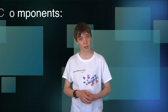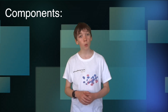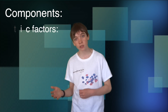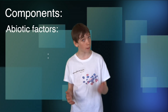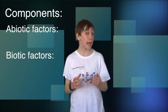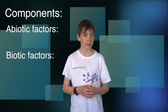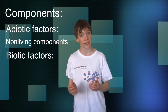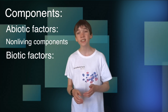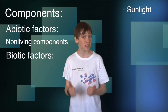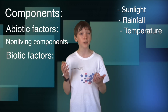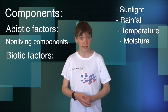So what are the different components of an ecosystem? Well there are two different types of components, the abiotic factors and the biotic factors. The abiotic factors are the non-living components which make up the environment of the ecosystem, such as the amount of sunlight, the amount of rainfall, the temperature, or how much moisture there is in the air.